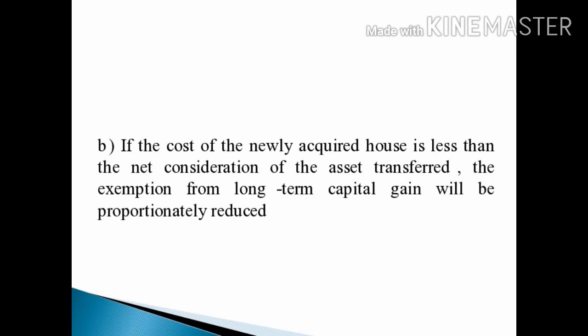The second case: the exemption on long-term capital gain shall be limited to the cost of the newly acquired house. That is, the exemption available is proportional to the amount of long-term capital gain based on the cost of the newly acquired house.